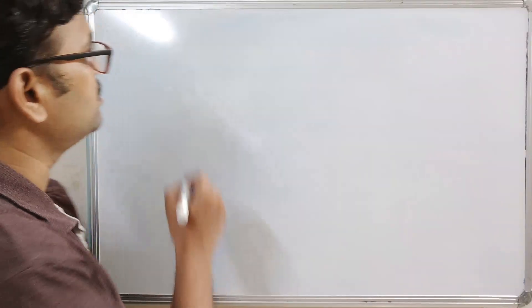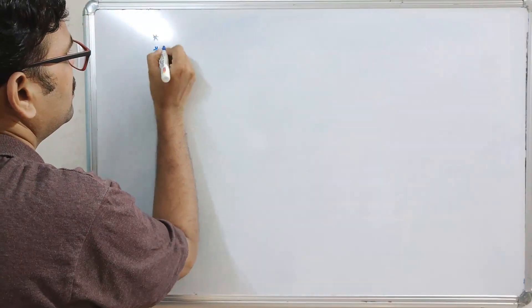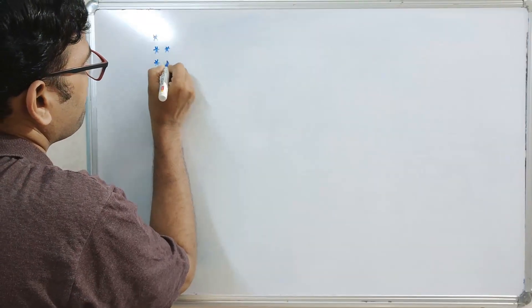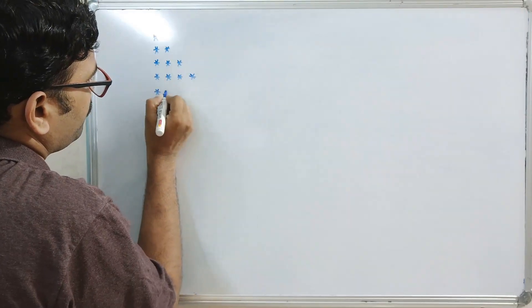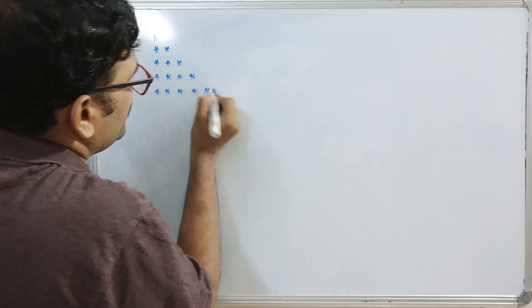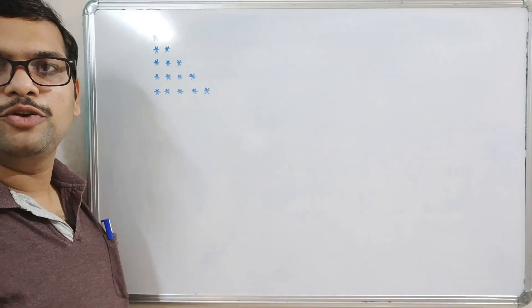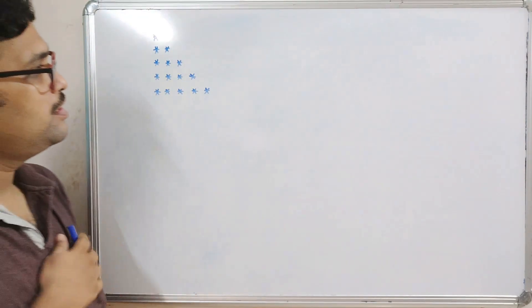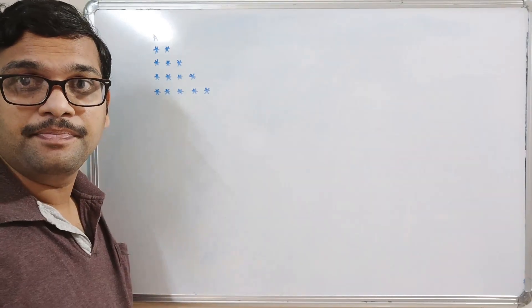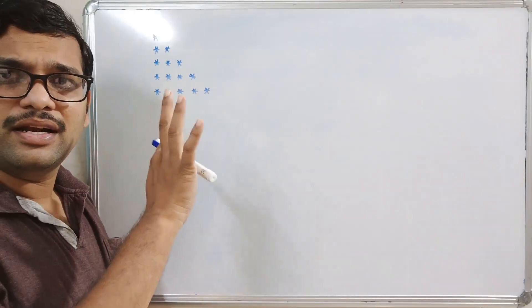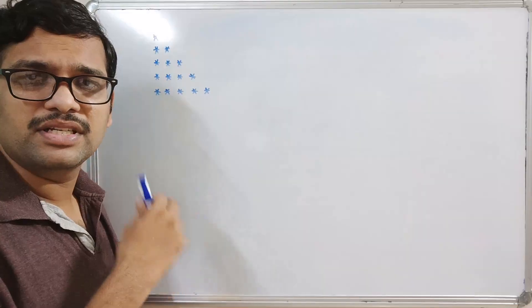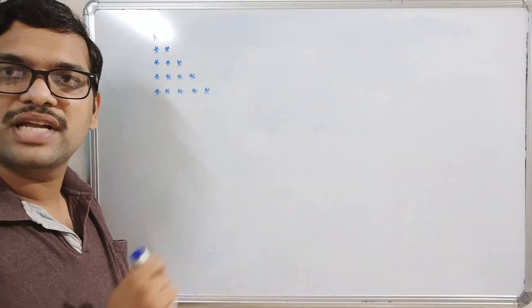Hello friends, welcome back to our channel. In today's session we'll see pattern programs. Coming to pattern programs, the data we are representing — whether it's stars, alphabets, or numbers — is represented in terms of rows and columns.